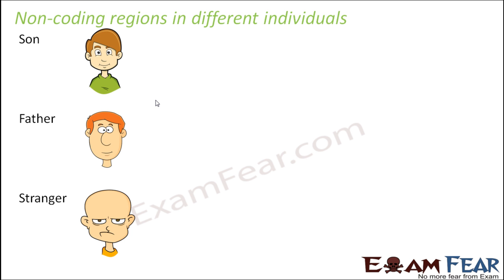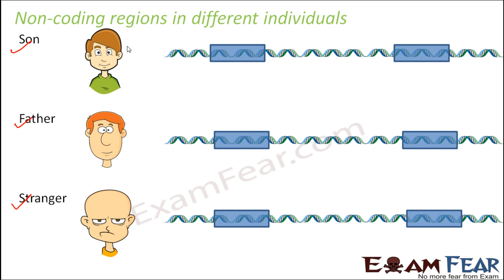Let us see how the non-coding region differs in different individuals. Here we have taken an example of a son, his father, and a stranger. The concept of DNA fingerprinting should be able to establish that the boy is the son of the father, and that there is no relationship with the stranger. Let us see how the non-coding regions of these three individuals differ.